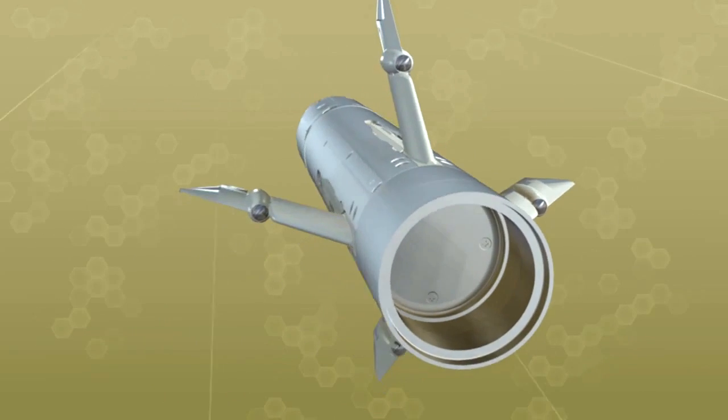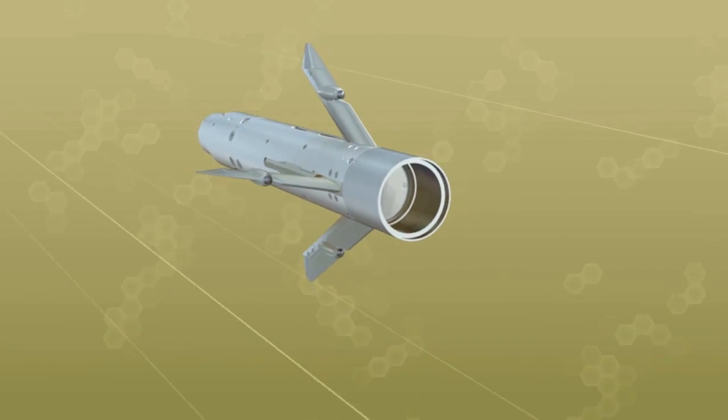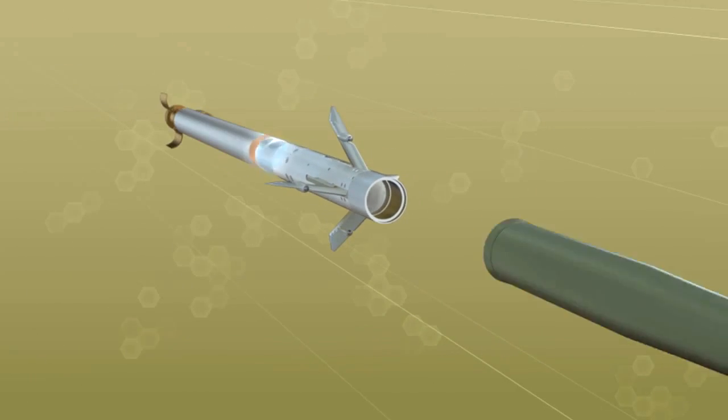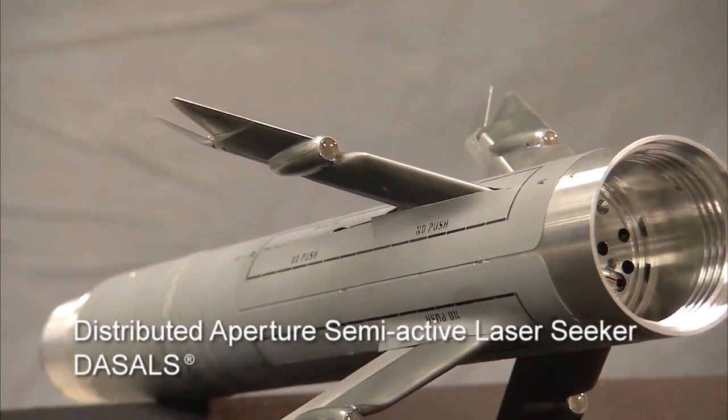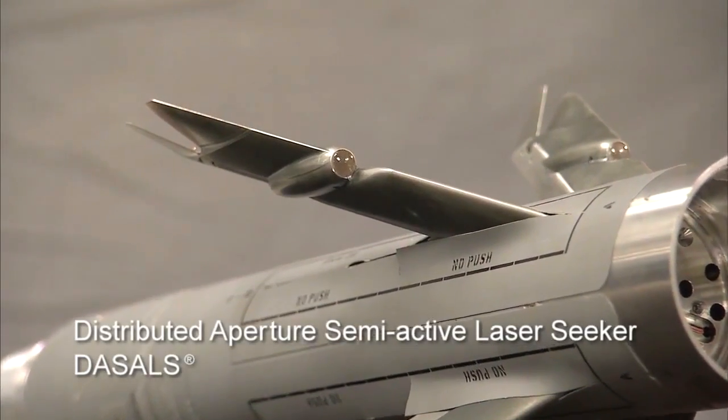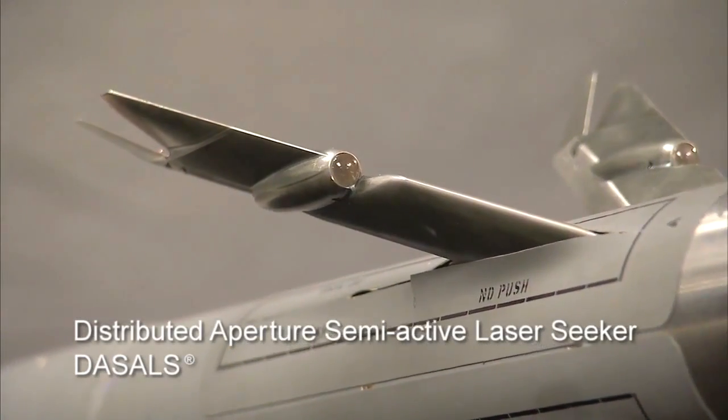BAE Systems developed an innovative mid-body design for APKWS. The key to the design is the placement of the Distributed Aperture Semi-Active Laser Seeker, or DASSEL's, aperture domes on each of the guidance section wings.